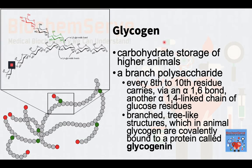Let us now look at several biomedically important polysaccharides. The first is glycogen. We have, in a way, already discussed the basic structure of this polysaccharide. Glycogen, as we saw in a previous slide, is a multi-branched polysaccharide of glucose that serves as a form of energy storage in animals, fungi, and bacteria. Additionally, the formation and breakdown of glycogen are subject to complex regulation by hormones and other factors.